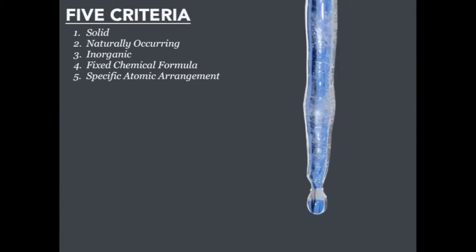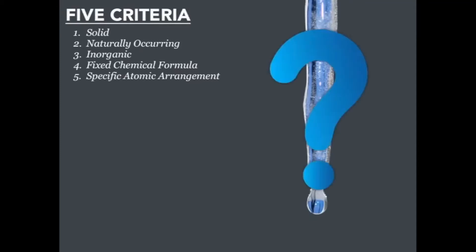What about ice? Ice is solid — it exists naturally as a solid at the poles and in high mountains. It is naturally occurring, not organic, has a fixed chemical formula of H₂O, and has a specific atomic arrangement. By our criteria, ice qualifies as a mineral. However, there is debate since most places on Earth water exists as a liquid, so we'll give that one a question mark.